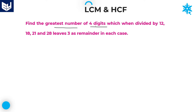Find the greatest number of four digits which when divided by 12, 18, 21, and 28 leaves 3 as remainder in each case. This problem is a combination of the third model as well as the first model. The first model has the same remainder in each case, and the third model is based on number of digits.